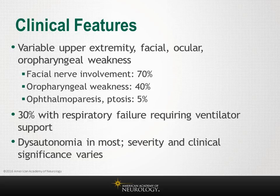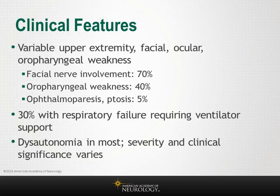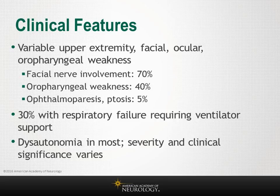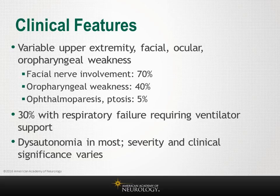A quarter to a third of patients go on to develop respiratory failure requiring ventilatory assistance. Autonomic dysfunction, predominantly cardiovascular dysregulation, is present in most patients if carefully looked for. Most often dysautonomia presents as sinus tachycardia, but patients may also have bradycardia, labile blood pressures, orthostatic hypotension, cardiac arrhythmias, neurogenic pulmonary edema, and changes in sweating. About 5 percent may have dysautonomia affecting the bladder or bowel in the form of urinary retention, incontinence, constipation, ileus, or fecal incontinence.